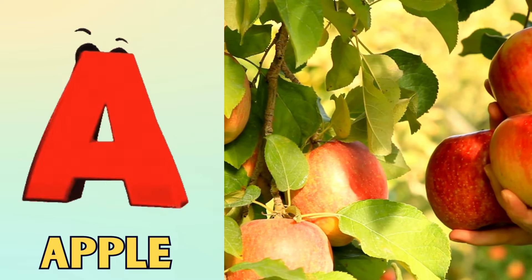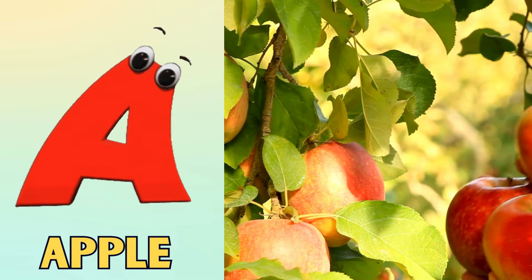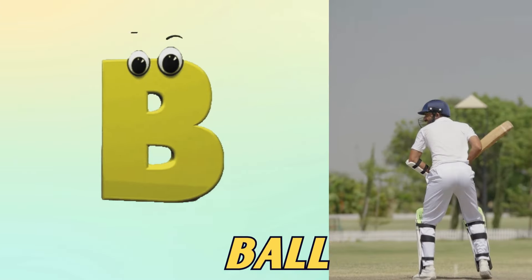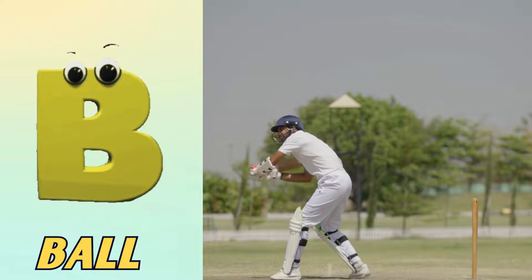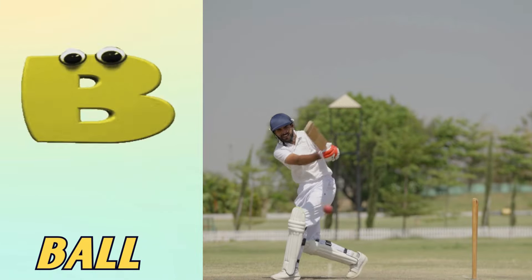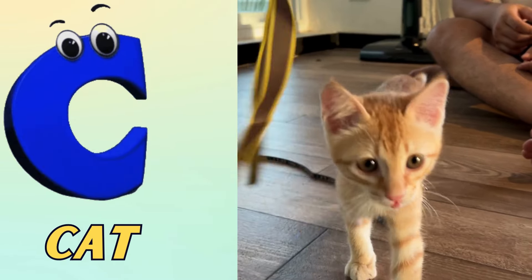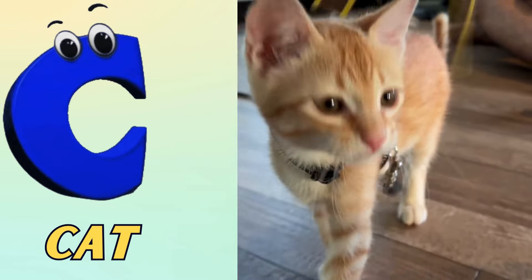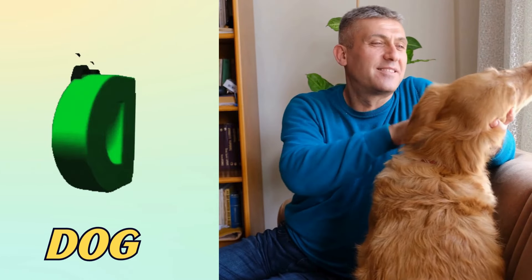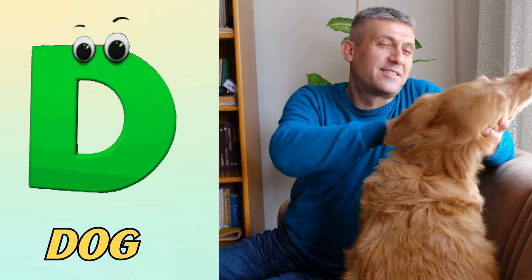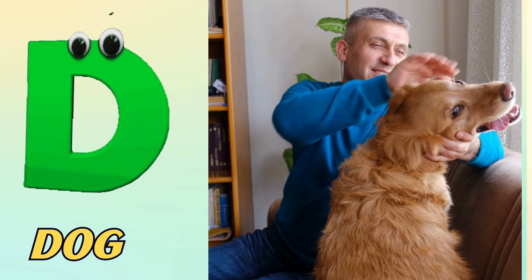A is for apple, a-a-apple. B is for ball, b-b-ball. C is for cat, c-c-cat. D is for dog, d-d-dog.